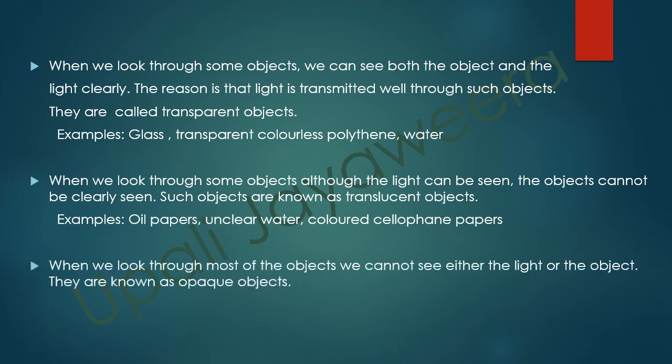When we look through most objects, we cannot see either the light or the object. They are known as opaque objects. Examples: cardboard, wood, metal, paper, tar.